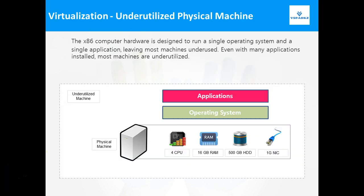This picture shows a typical physical machine with CPU, RAM, hard disk, and NIC card. This physical machine is designed to run a single operating system and a single application, leaving most of the machine's resources underutilized. For example, if you have 16 GB of RAM in this machine, the entire 16 GB of RAM will not be utilized by the operating system and the applications. It will be using hardly around 8 GB or 10 GB of RAM — the remaining 50% of the RAM resource is completely idle. For these idle resources, you are spending money.